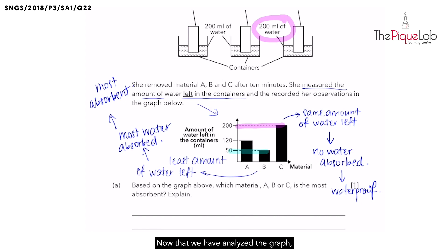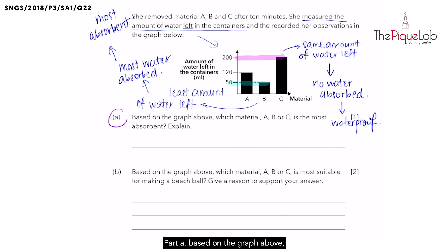Now that we have analyzed the graph, let's look at the questions. Part A. Based on the graph above, which material A, B or C is the most absorbent? Explain. Aha! We know this already, right? We have found that material B is the one that is most absorbent. But how do we phrase our answer?